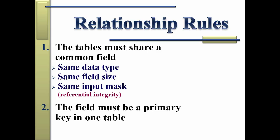The second rule is the field must be a primary key in one of the two tables. When you're building a relationship between two tables, they have to share a common field, and that field must be a primary key in one of the two tables. I actually make little notes by my primary key fields — the data type and field size — so that when I'm building my tables, I ensure the fields being related have the same data type and field size.